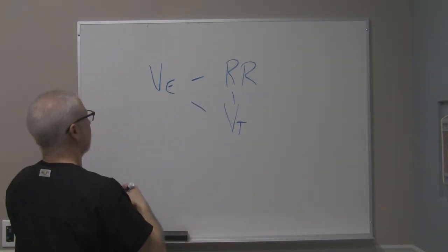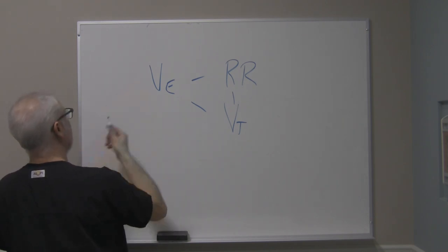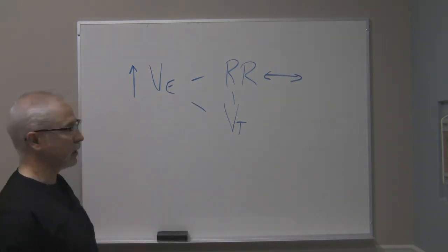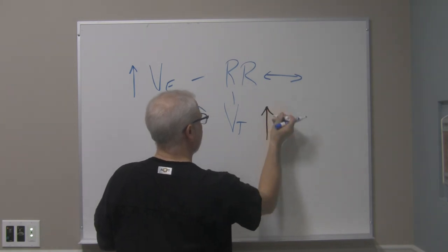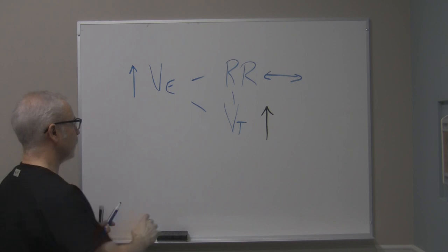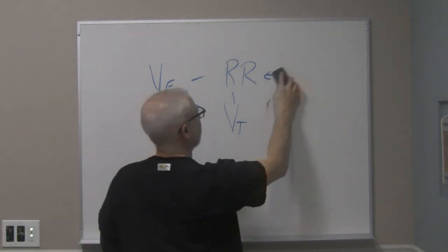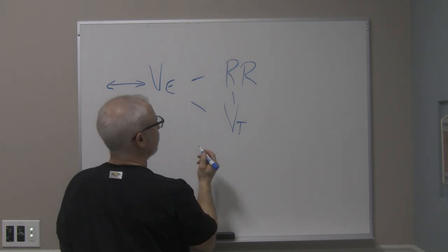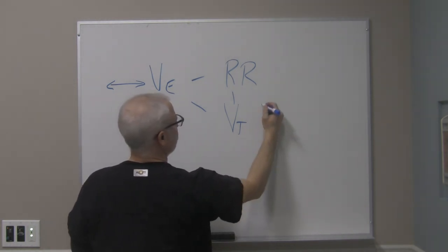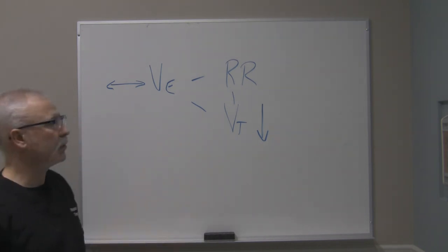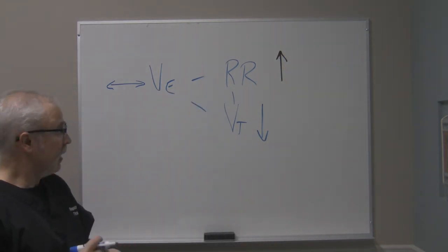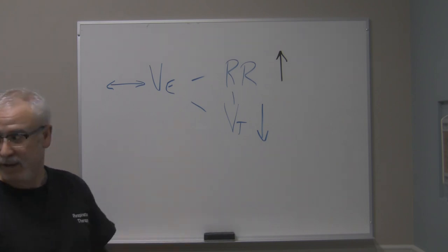Likewise, we can also say if the minute ventilation has gone up while the respiratory rate stayed the same, in order for that minute ventilation to go up, the only way it could go up if the respiratory rate was constant is if the tidal volume increased. We'll do another one. The minute ventilation stays the same, tidal volume drops. If the minute ventilation stays the same while the tidal volume decreases, what has to happen to respiratory rate? It has to increase in order to maintain the same minute ventilation. And that kind of makes sense and is very familiar to the first situation that we covered.